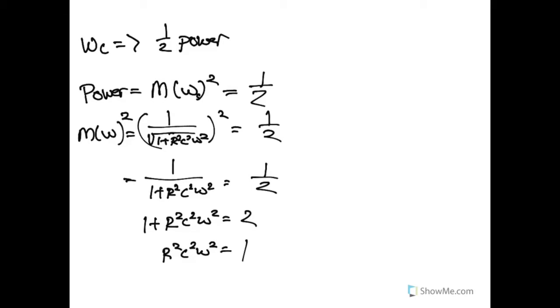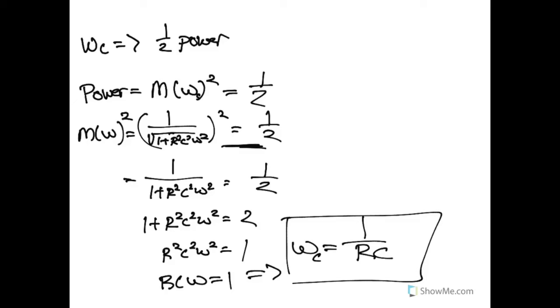And so now, if I take the square root of all of this, we have RCω is equal to one. And so finally rearranging, if we solve for frequency, we get one over RC. And since we solved here for when this expression was one half, that is how we determine the corner frequency for this particular low pass circuit.